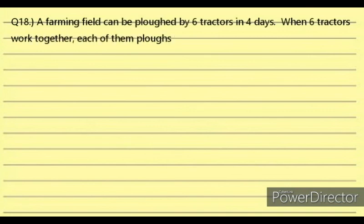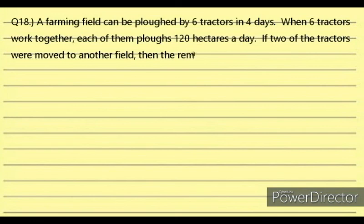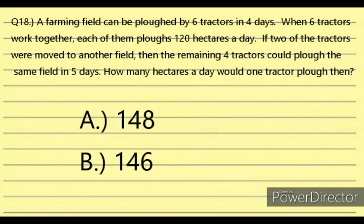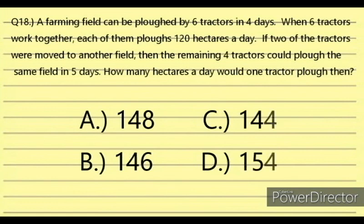Question 18. A farming field can be plowed by 6 tractors in 4 days. Each tractor plows 120 hectares a day. If 2 tractors were moved to another field, the remaining 4 tractors could plow the same field in 5 days. How many hectares a day would one tractor plow then? Answer choices: A. 148, B. 146, C. 144, D. 154.